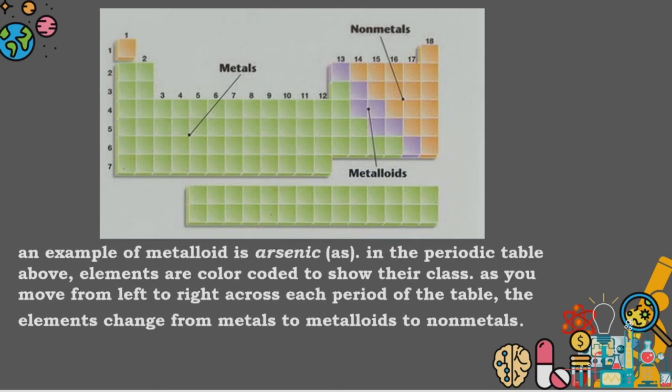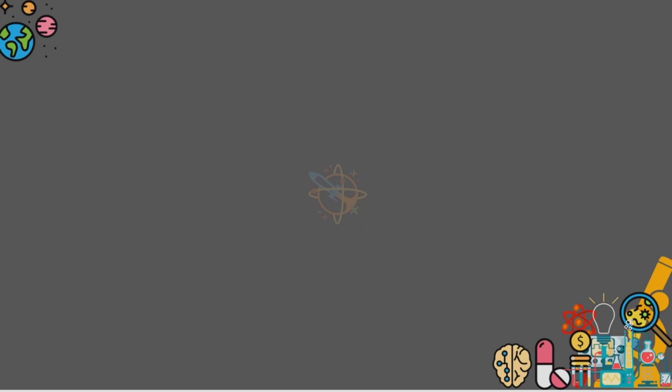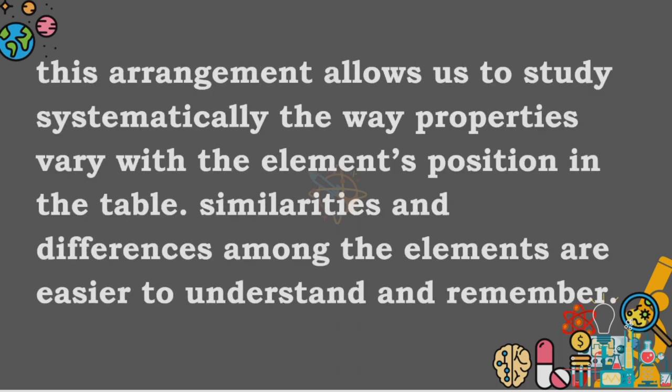In the periodic table above, elements are color coded to show their class. This arrangement allows us to study correctly the way properties vary with the elements' position in the table.